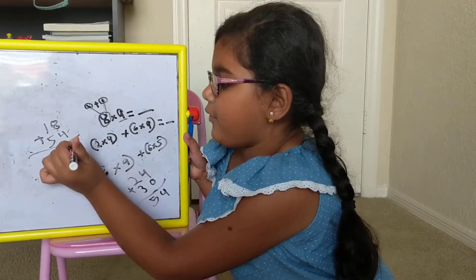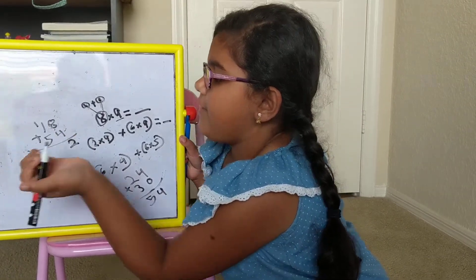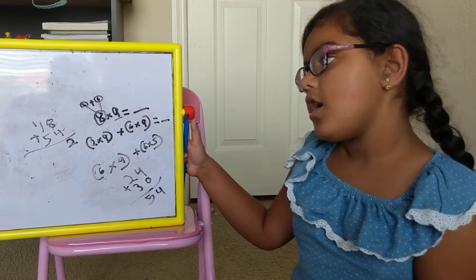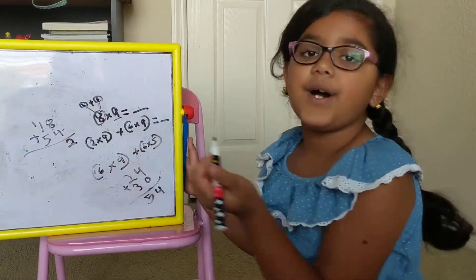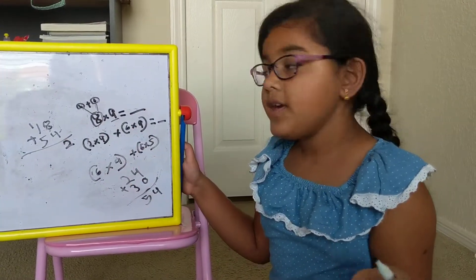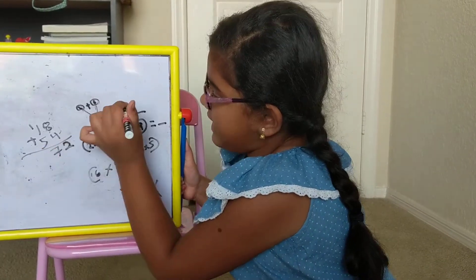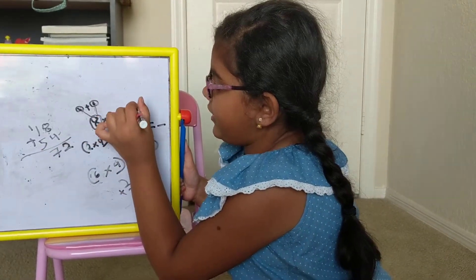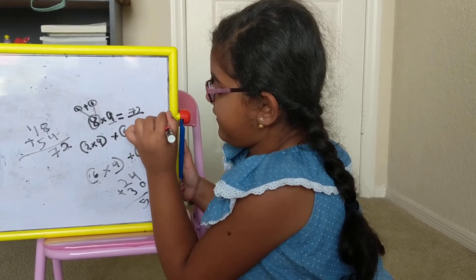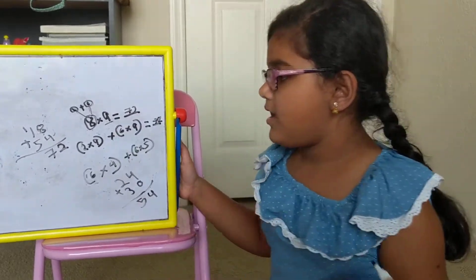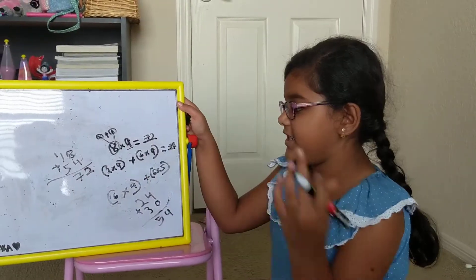And 18 plus 54: 8 plus 4 is 12. So we put the 2 there and the 1 there. 1 plus 1 is 2, and 2 plus 5 is 7. And so there is our answer: 72. Therefore, 8 times 9 is 72.